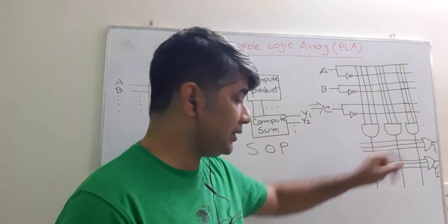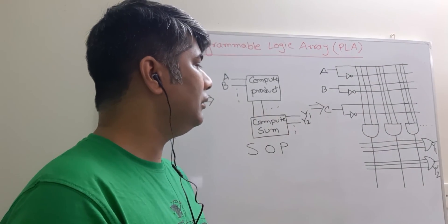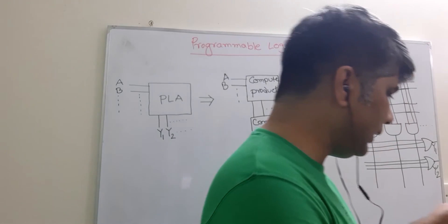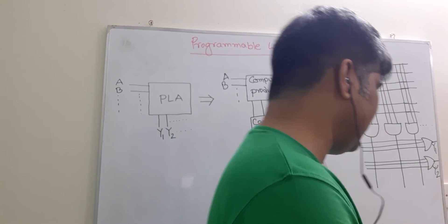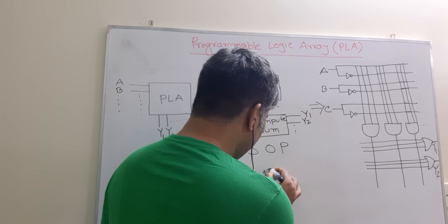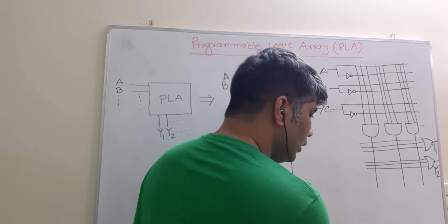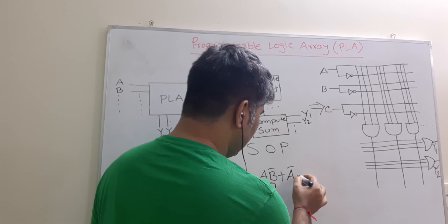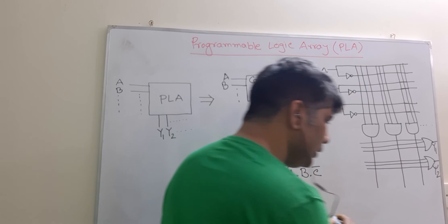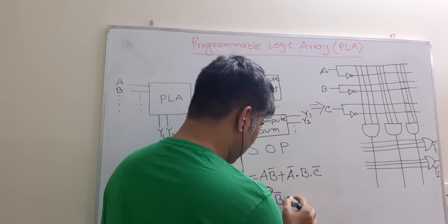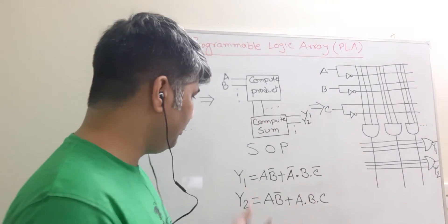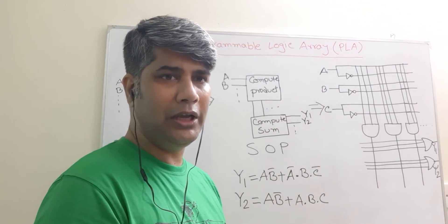Now let's use this open circuit to execute some expressions. One expression is: y1 = ab' + a'bc'. And y2 = ab' + abc. Let's say we have these two expressions in hand. How can we make this PLA execute these two expressions?